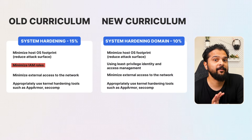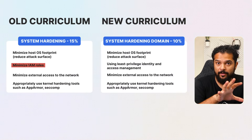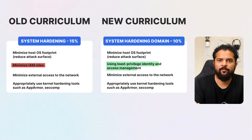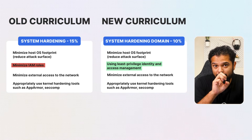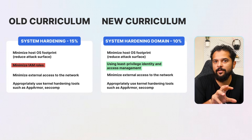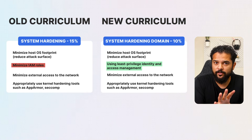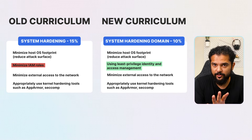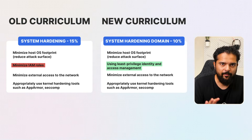The appropriate use of kernel hardening tools like AppArmor and seccomp is also emphasized. These tools help secure the kernel by enforcing security policies that restrict the capabilities of processes, protecting the system from various types of attacks. The only notable change in this domain is the refinement of minimizing IAM roles to specifically using least-privileged identity and access management — assigning only the permissions absolutely necessary for a user or service to perform its function.